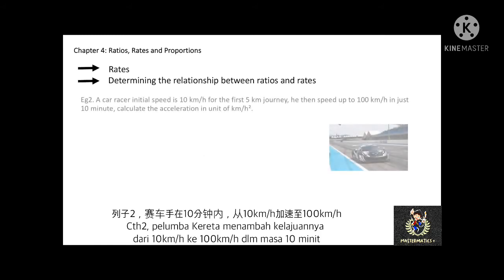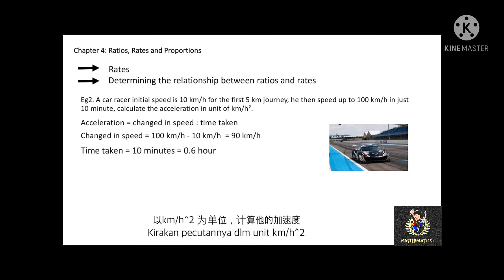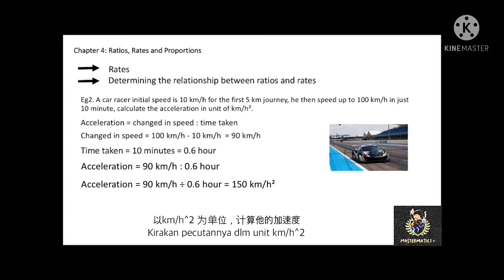Example 2: Calculate acceleration in km per hour squared. A car has an initial speed of 10 km/h. It speeds up to 100 km/h in just 10 minutes. The acceleration equals change in speed over time taken. The change in speed is 100 minus 10, which equals 90 km/h. The time is 10 minutes, divided by 60, giving 1/6 hour. Therefore, acceleration equals 90 km/h divided by 1/6 hour, which equals 150 km per hour squared.